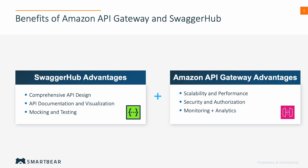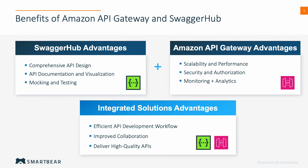Monitoring and analytics: Amazon API Gateway provides built-in monitoring and analytic tools that track API usage, performance metrics, and error rates in real time. By leveraging the strengths of SwaggerHub and Amazon API Gateway together, developers can streamline the API development lifecycle, improve collaboration, and deliver high-quality APIs that meet the needs of their users and stakeholders.